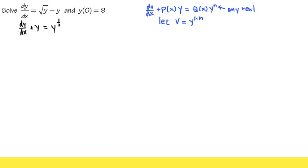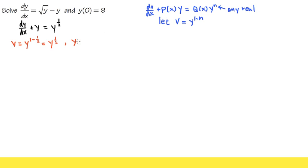In this case, n is 1/2, so we let v equal y raised to the 1 minus 1/2 power, which is 1/2. So v equals y to the 1/2 power, which means we can square both sides: y equals v squared. From here, it's easier for us to differentiate.